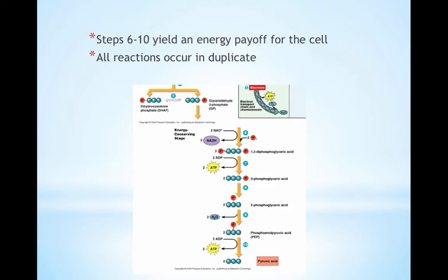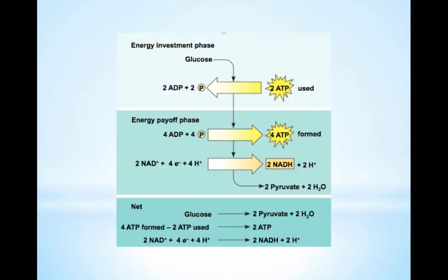The net gain of two ATPs from glycolysis is only 5% of the energy that a cell can harvest from a glucose molecule. The two NADHs from steps five through eight are 16% of the energy from glucose, but it is not available for use in the absence of oxygen. The next two stages of cellular respiration release a lot more energy.